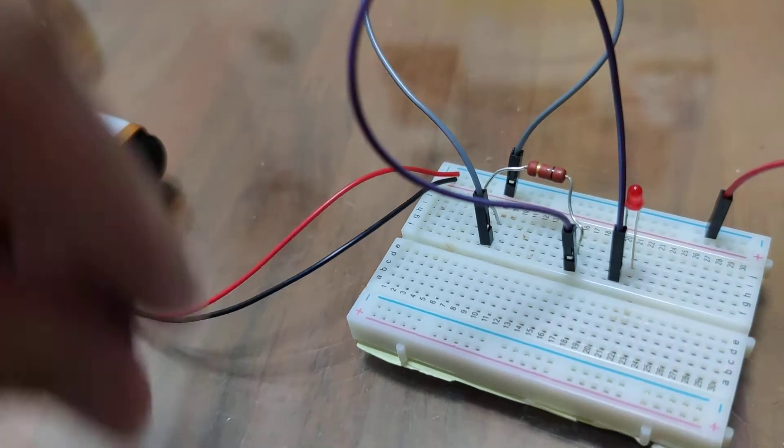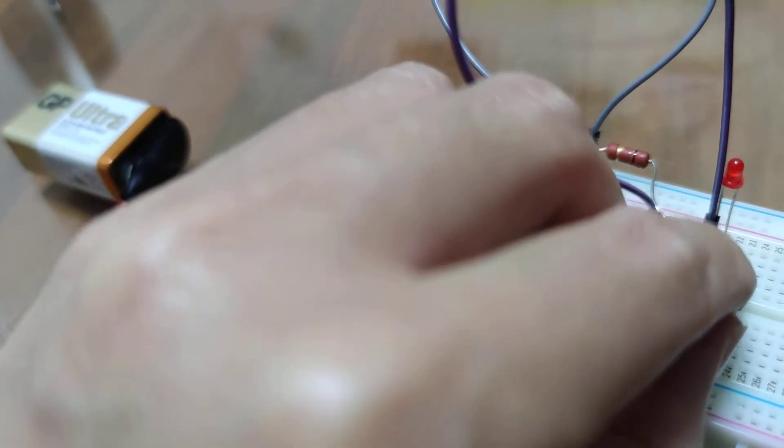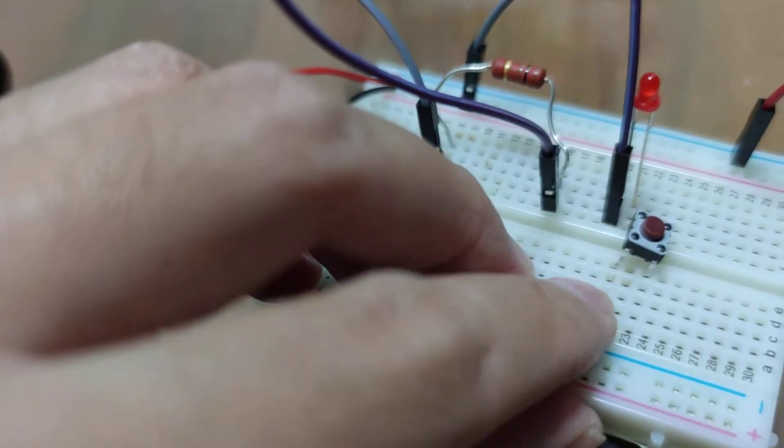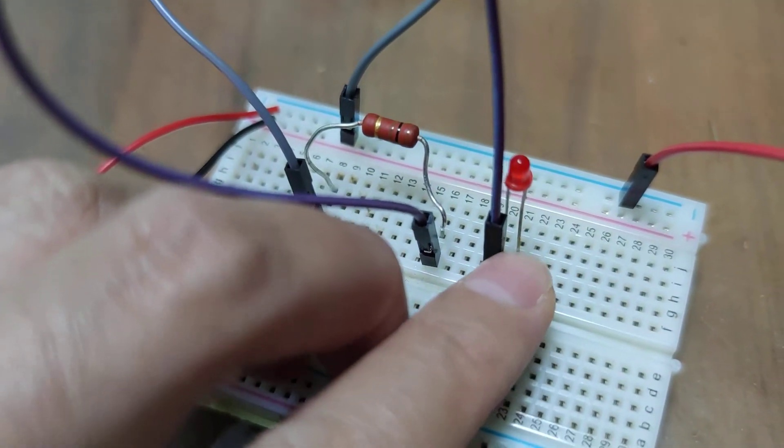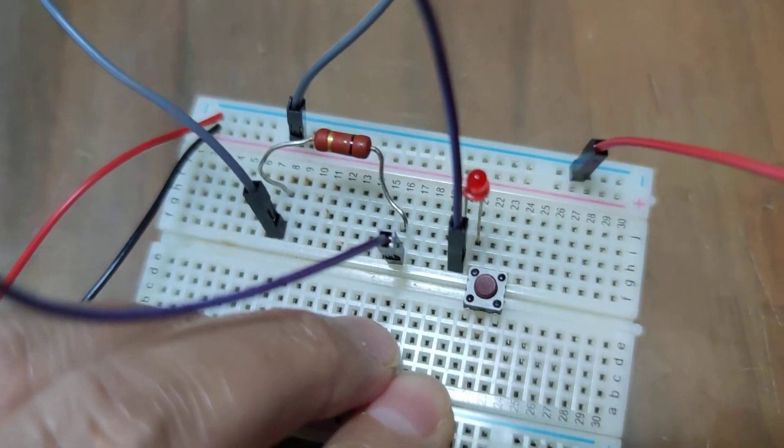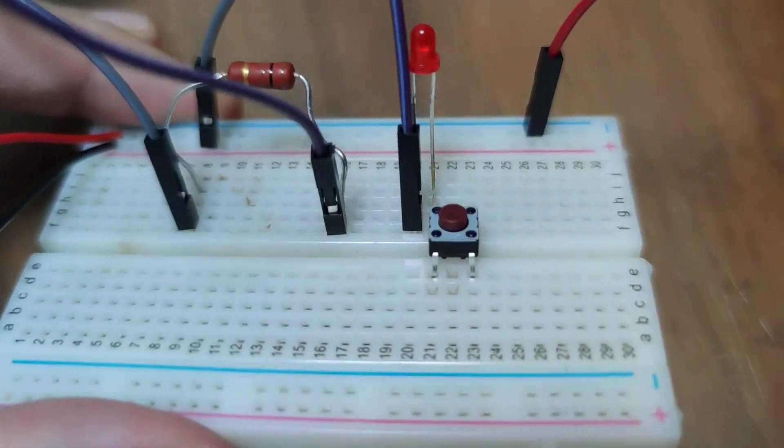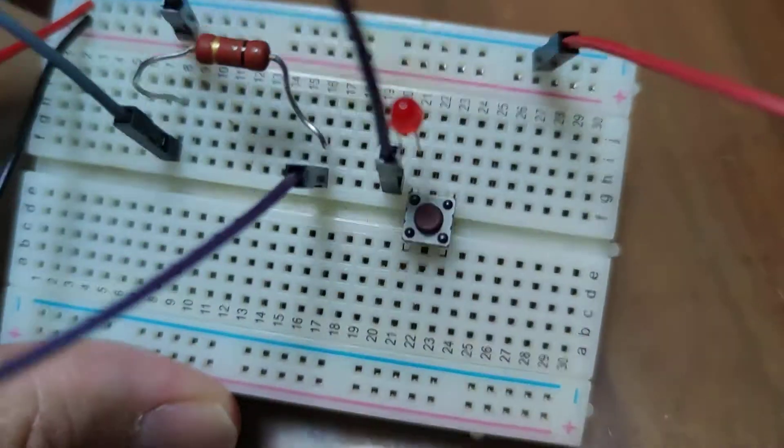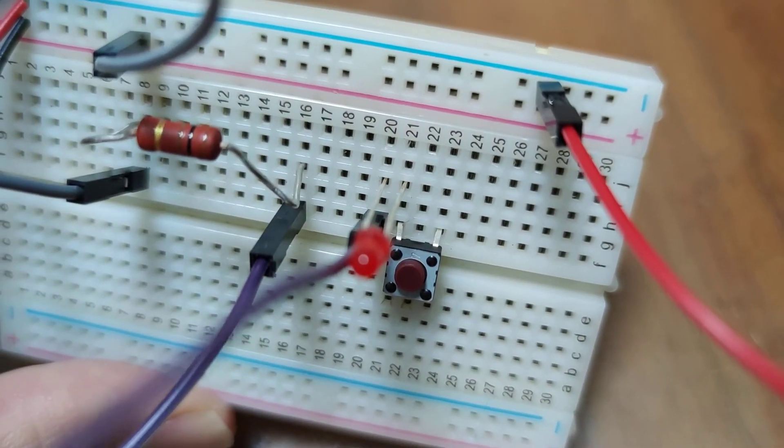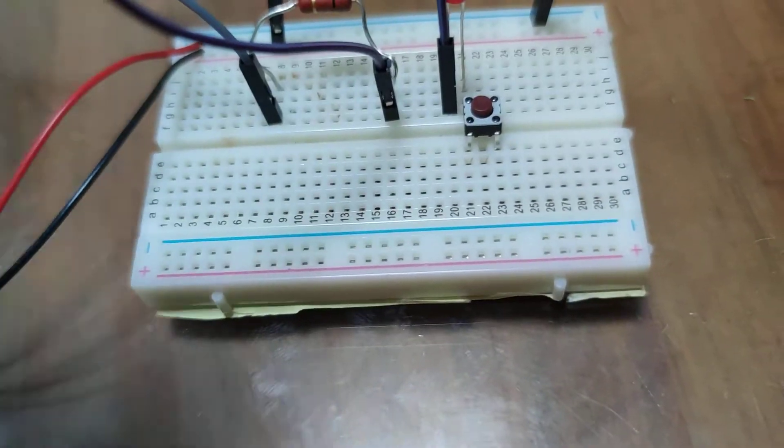So now what we're going to do is we're going to put this little switch here right about there. I'm going to try to get a good overhead view so you guys can see how that's connected. So all four of those legs - the two front legs are connected there, the two back legs are connected there.